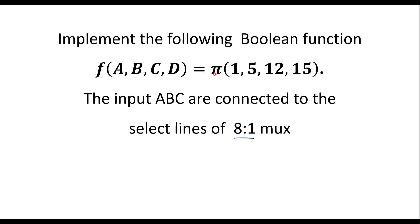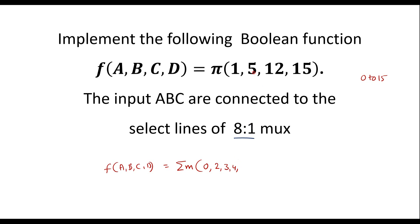Since π indicates max terms, we will try to represent the same function using min terms. That is, f(a, b, c, d) can be represented in min term form. The remaining numbers which do not exist in the max term list should be considered as the min terms. The function has 4 variables, so possible values are 0 to 15. The missing values — 0, 2, 3, 4, 6, 7, 8, 9, 10, 11, 13, 14 — are the min terms. The complement of max terms are nothing but min terms.